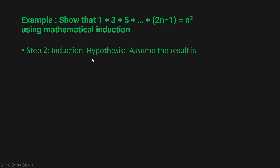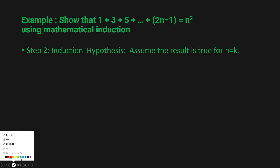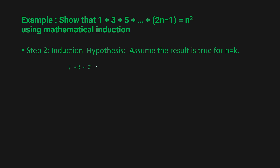Step 2 is the induction hypothesis — you assume that the result is true for n = k. So you replace n with k: 1 + 3 + 5 + ... + (2k - 1) = k². You have to assume that the result is true for n = k.